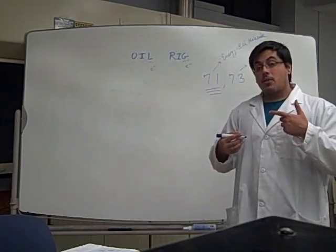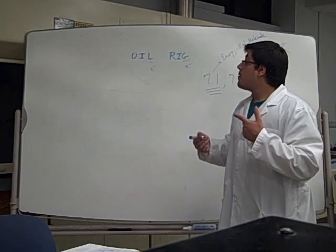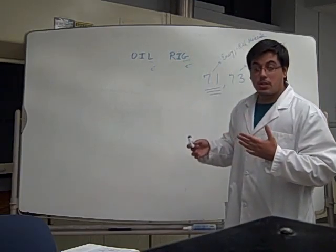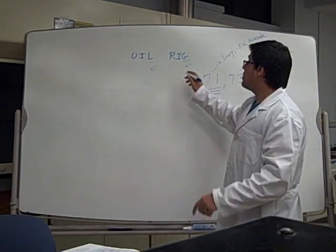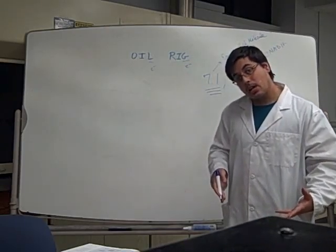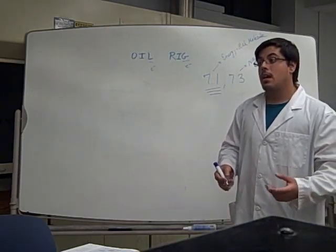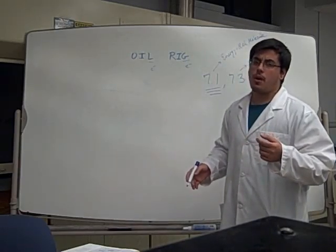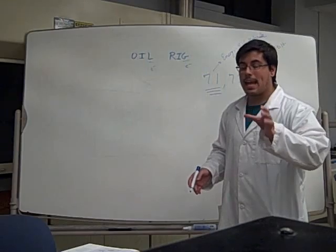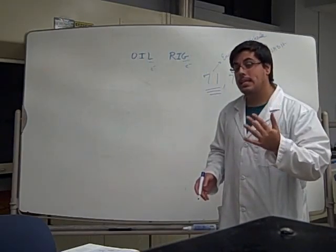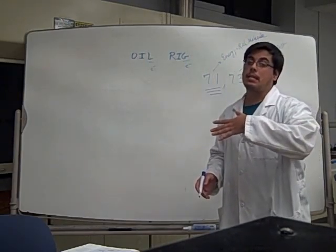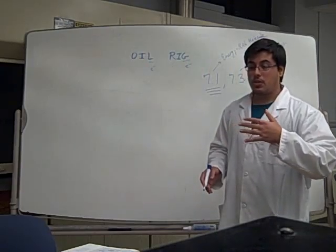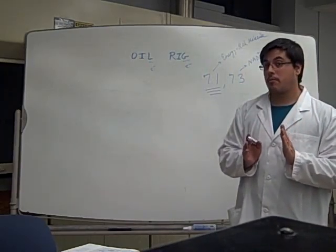Going back the other way in figure 7.1, you have a reduction. With the reduction, you have a gain in electrons. So what's gaining the electrons in this case is the energy-rich molecule, and it's gaining these electrons from the NADH.